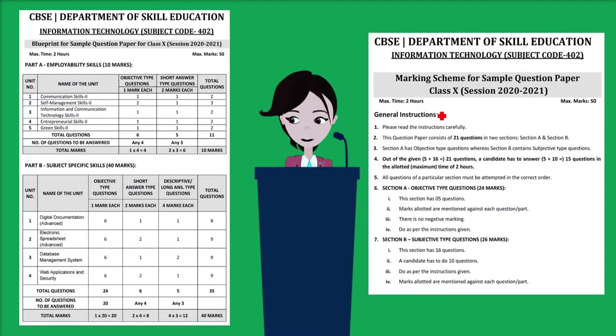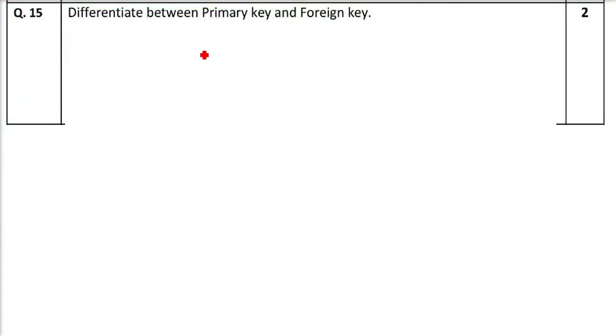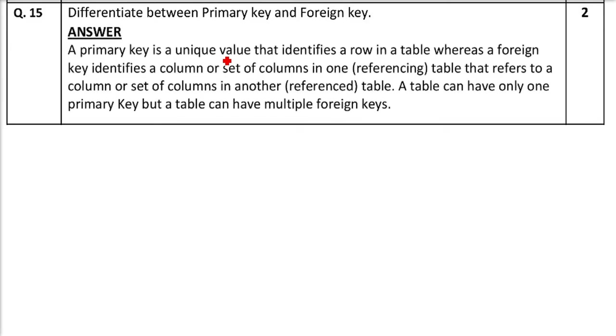This is sample question paper, class 10th, 2021. Differentiate between primary key and foreign key. The first thing is, what is primary key? Primary key is when you can uniquely identify a record in a relational database system. Let me give you an example first.